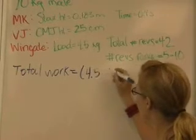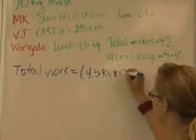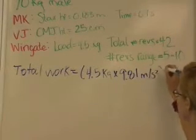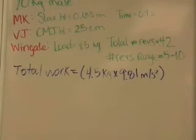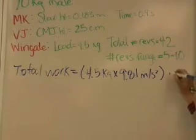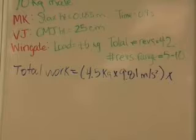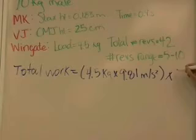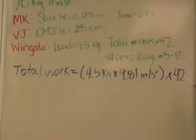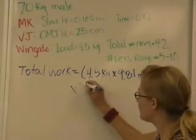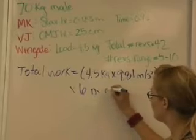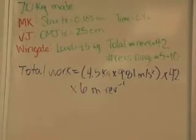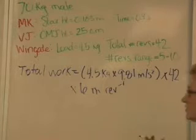That'll get it into newtons. We're then going to multiply by the total number of revolutions. So for this individual, it was 42 times 6 meters per revolution. This is going to be constant for this sample because each revolution was always 6 meters.